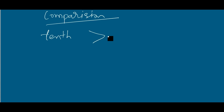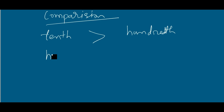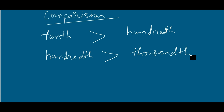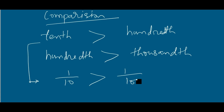Tenths is greater than hundredths, and hundredths is greater than thousandths. Be clear about this point. That means one-by-ten is greater than one-by-hundred. Writing this in decimal form: 0.1 is greater than 0.01.